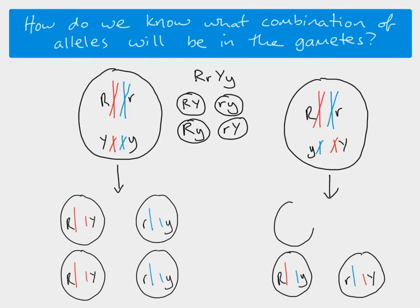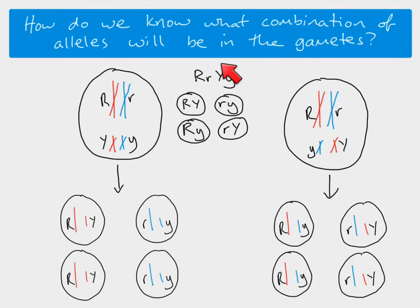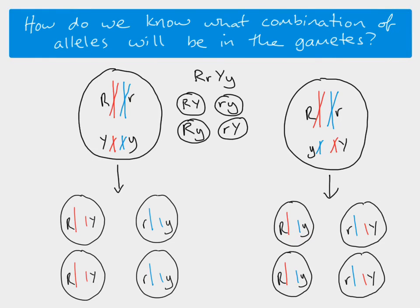If you look at the gametes and the allele combinations in our gametes, you'll see that they match what we had when we simply worked out all the different possible combinations. So this gamete here — big R, big Y — is down here. Little R, little Y is down here. Big R, little Y is here. Little R, big Y is down here.